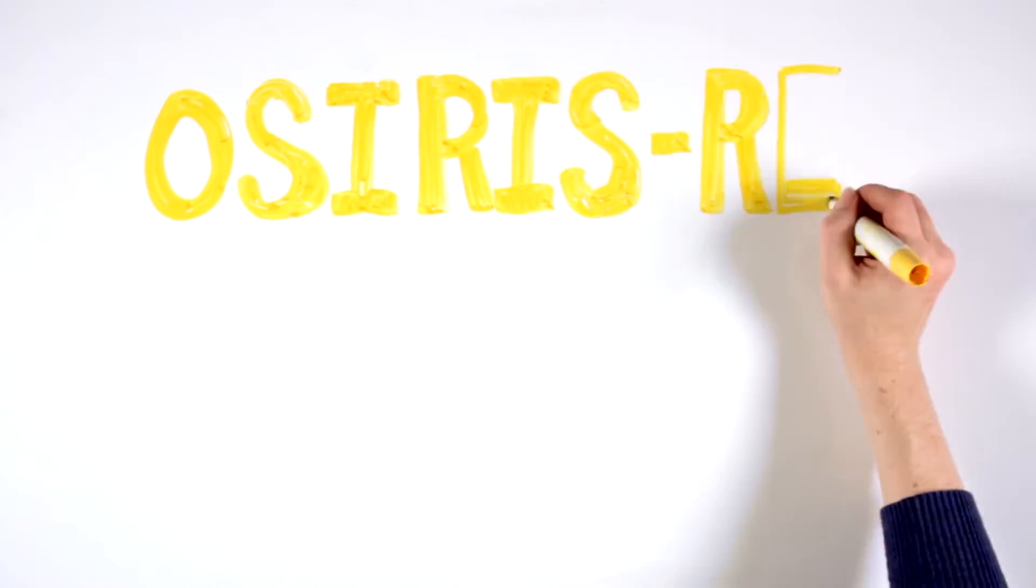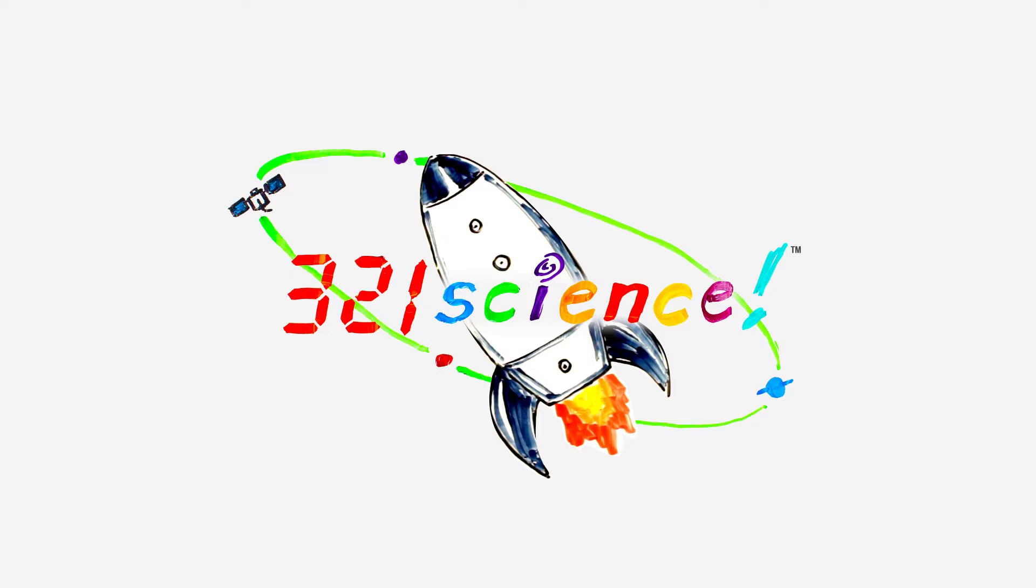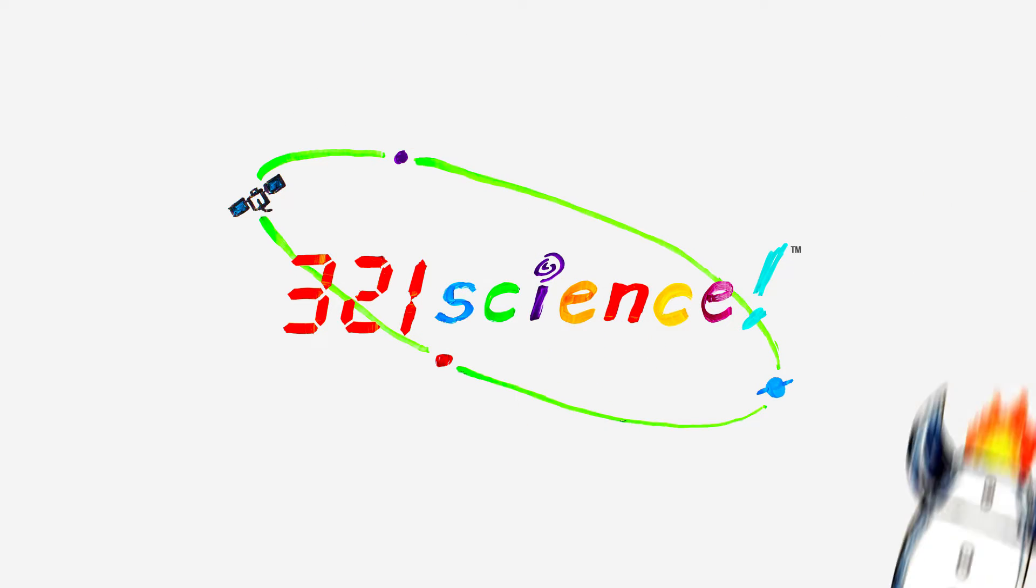What is the difference between prograde and retrograde motion, and how does it relate to asteroids? Join the 321 Science team as we explore two types of asteroid motion.